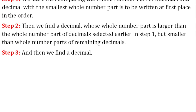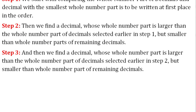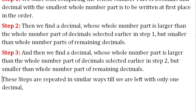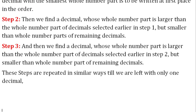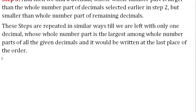Step 3: And then we find a decimal whose whole number part is larger than the whole number part of the decimals selected earlier in Step 2, but smaller than the whole number part of the remaining decimals. These steps are repeated in similar ways till we are left with only one decimal whose whole number part is the largest among all the given decimals, and it would be written at the last place of the order.